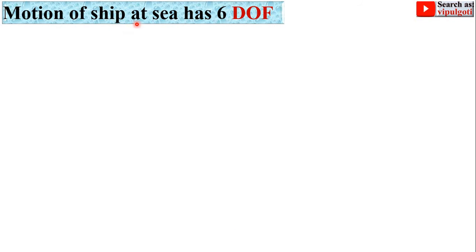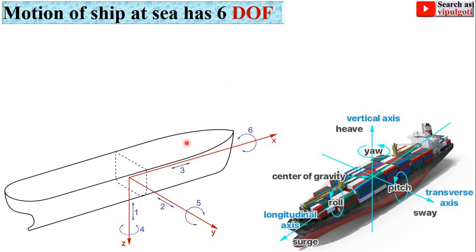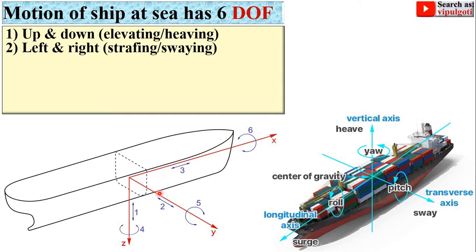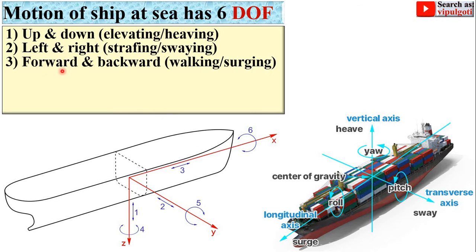Now let's consider the motion of a ship, which has six degrees of freedom. First, up and down — here you can see on the vertical axis — that is called elevating or heaving. Next, left and right — here you can see on the transverse axis — that is called swaying. Next, forward and backward on the longitudinal axis — that is called surging.